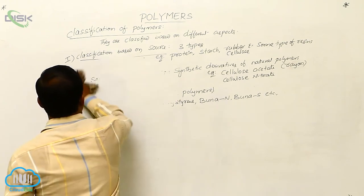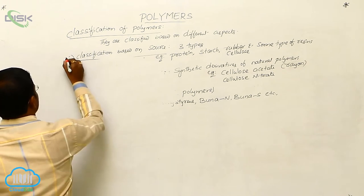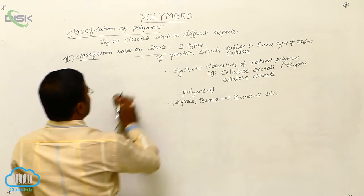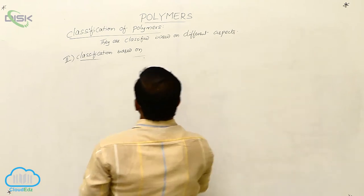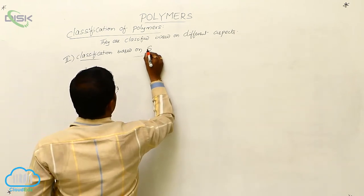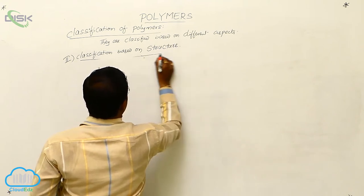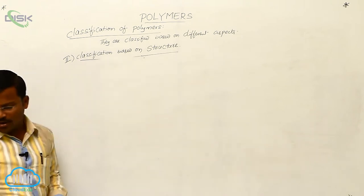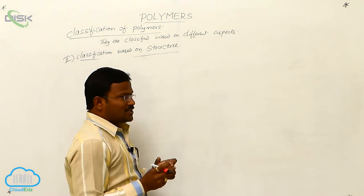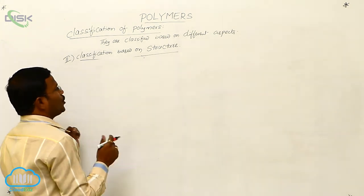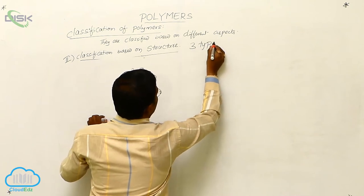Let us propose one more type of classification — the second type. This is the classification of polymers based on structure, based on the structural aspects of a given polymer. The polymers are classified into three types.